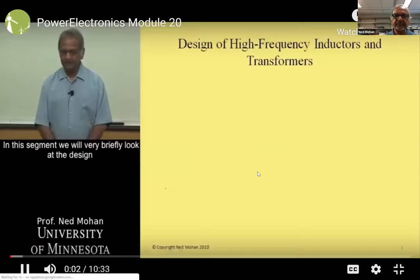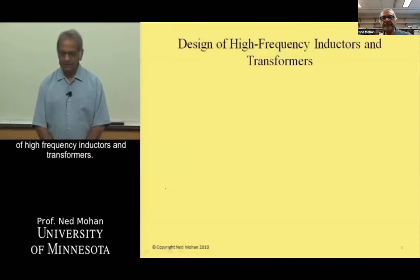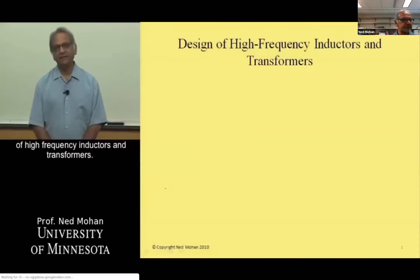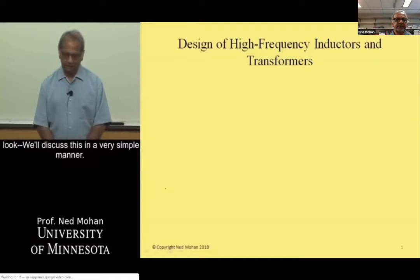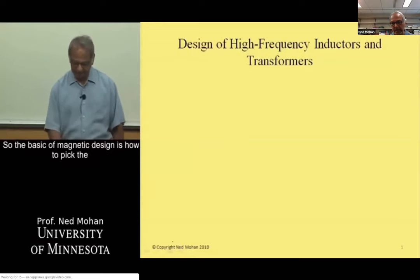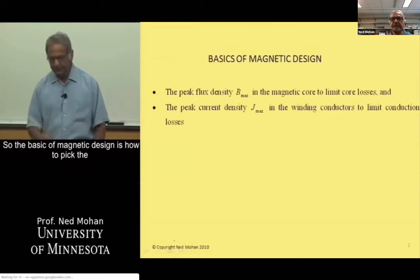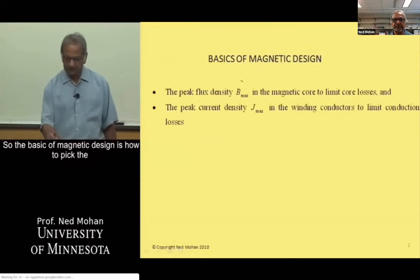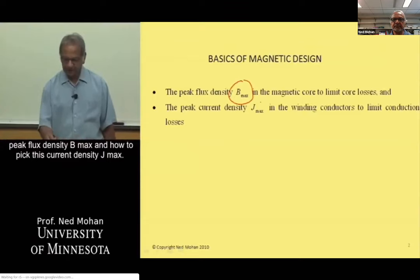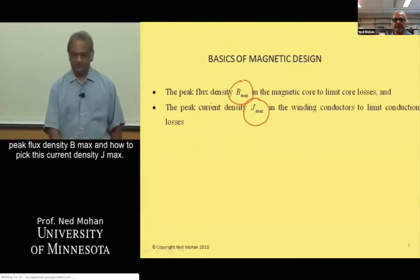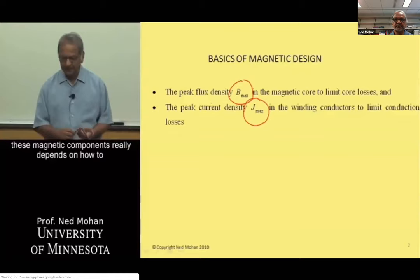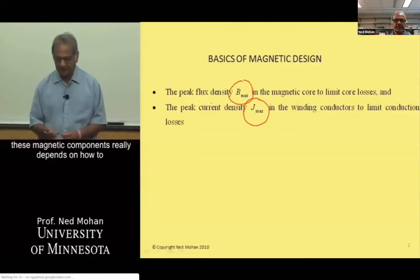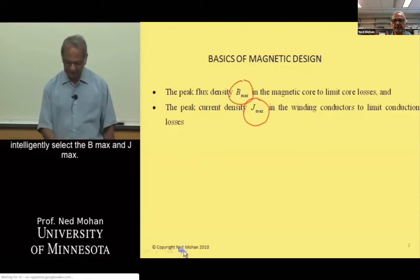In this segment we will very briefly look at the design of high frequency inductors and transformers. The basics of magnetic design come down to how to pick the peak flux density B_max and how to pick the current density J_max. Much of the discussion around designing these magnetic components depends on how intelligently you select B_max and J_max.